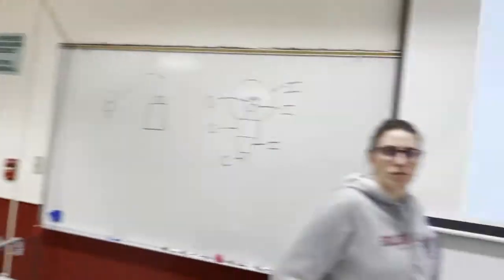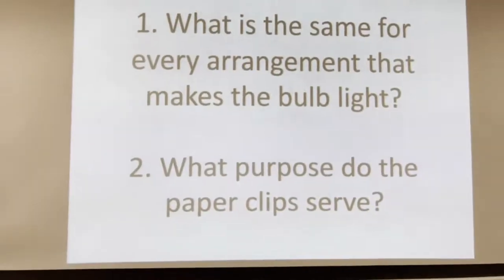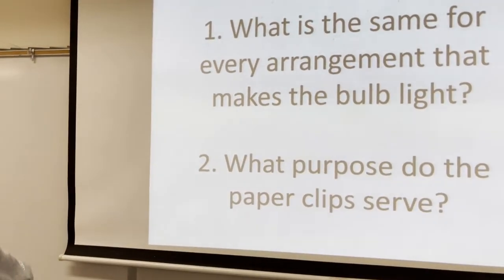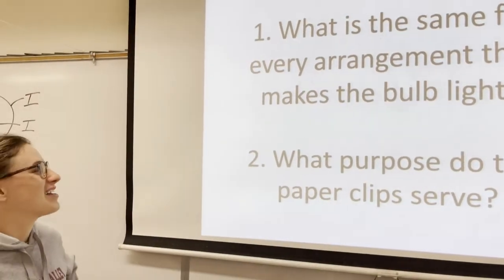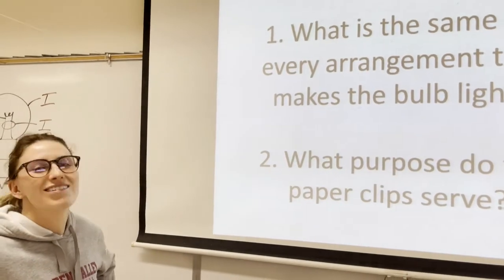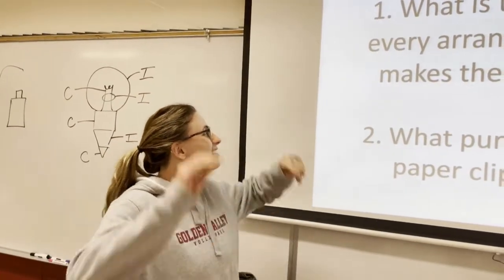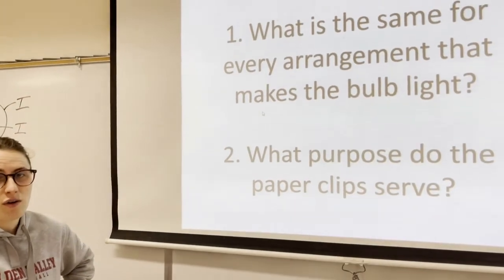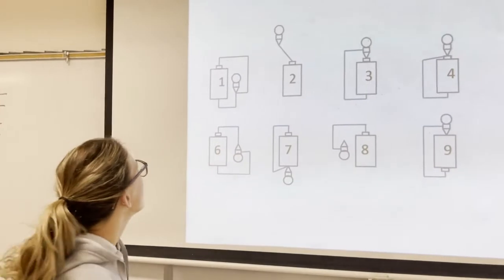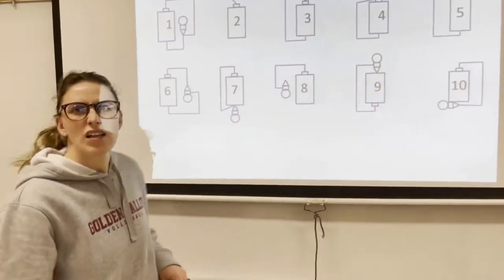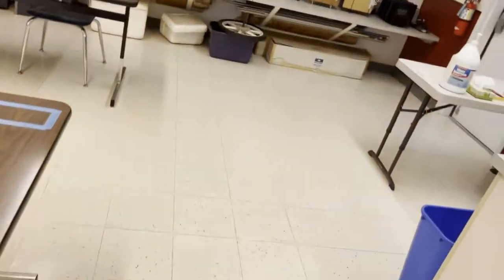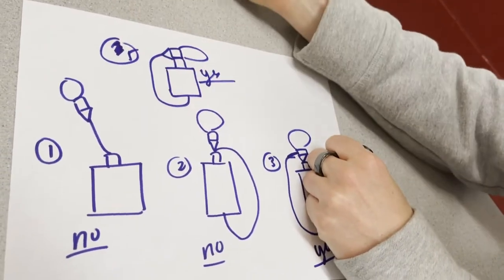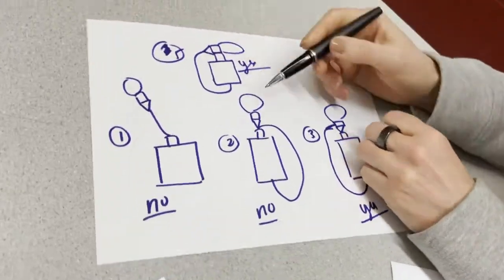We'll go over the pattern when we have the diagrams. What purpose does the paper clip serve? The paper clip is made out of metal, so it's a conductor — it provides a path for electrons to follow. Looking at when it worked: this one was connected only to the triangle tip on the bottom, and also to the bottom of the battery — that was our first yes.